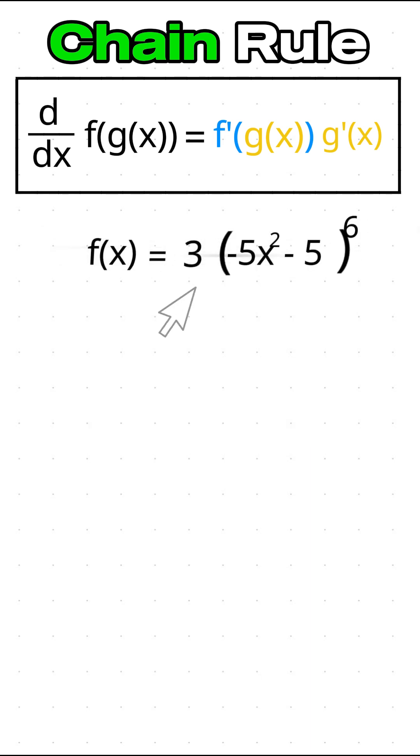Let's analyze this function. First, identify the inner function. The inner function is negative 5x squared minus 5.